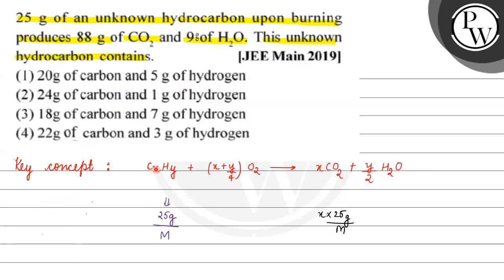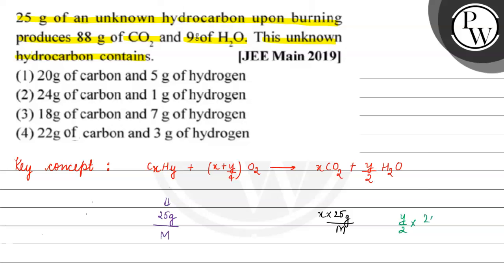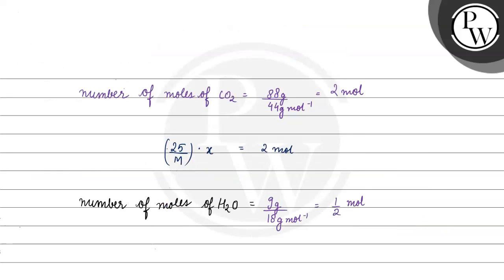If we talk about the compound, 1 mole of CxHy produces y by 2 moles of water. So 25 grams by m moles of CxHy produces y by 2 into 25 grams by m moles of water. We equate this to 1 by 2. So y by 2 equals 1 by 2. This is equation 1 and the previous is equation 2.